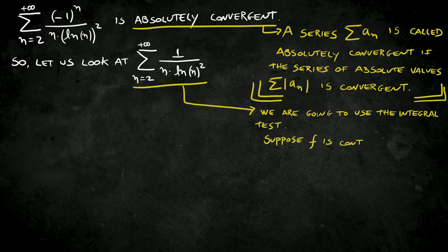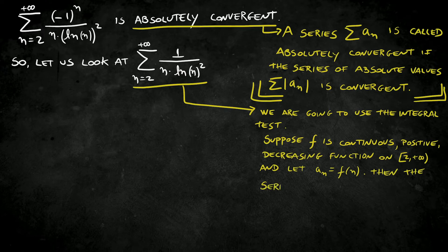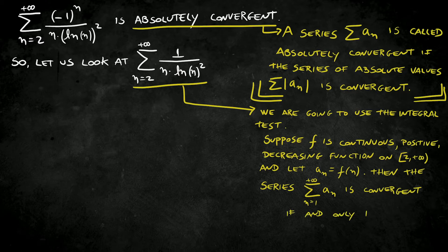The integral test says, suppose f is continuous, positive, and decreasing function on the interval. In that case, we're going to use the interval 2 to positive infinity because my series is from 2 to positive infinity. And let aₙ equals f(n). Then, the series is convergent if and only if the integral is convergent.